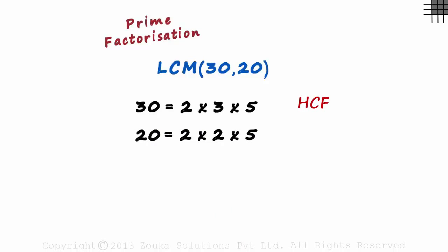To find the HCF, we just took the factors that are common to both the numbers and then multiplied them. But while finding the LCM, it is always better to write the factors in exponential form.